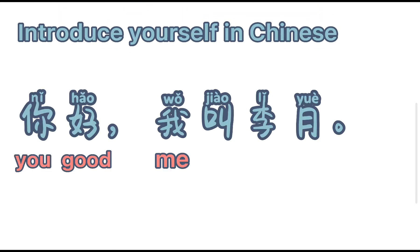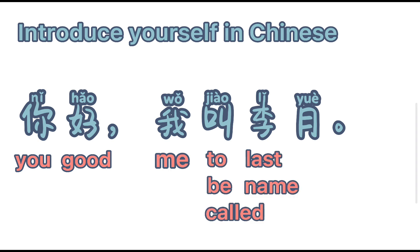你好, 我叫李月. Let's break it down: 你 means 'you', 好 means 'good', 我 means 'me', 叫 means 'to be called', 李 is the last name, and 月 is the first name.